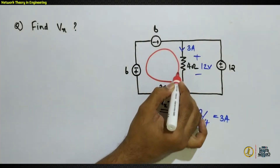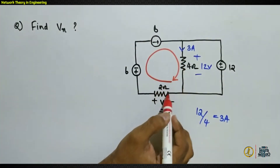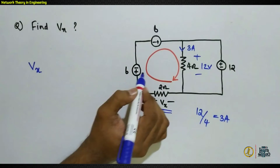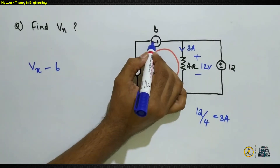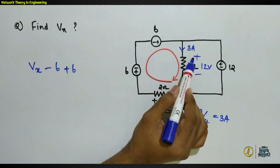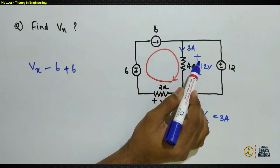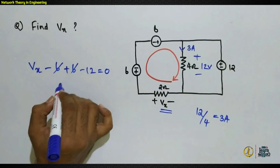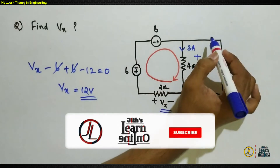Traversing the KVL loop: from start we encounter +VX, then −6 volts, then +6 volts, then the voltage across the 4-ohm resistor which is 12 volts taken as −12. The −6 and +6 cancel each other, so the KVL equation reduces to VX − 12 = 0, giving VX = 12 volts.